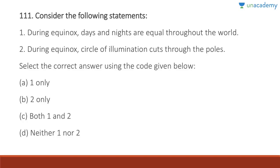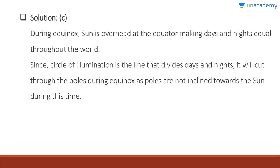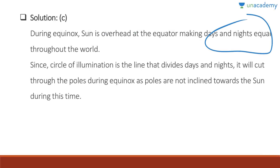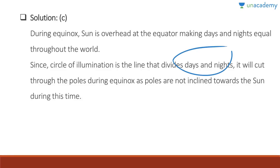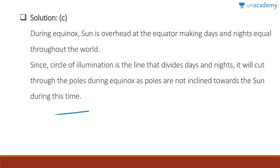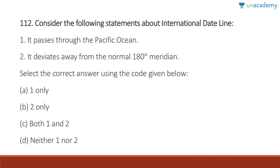Question 111: During equinox, days and nights are equal throughout the world — correct. During equinox, the circle of illumination cuts through the poles — also correct. Answer is C, both one and two. During equinox the sun is overhead at the equator, making days and nights equal throughout the world. The circle of illumination divides days and nights and cuts through the poles during equinox since poles are not inclined toward the sun at this time.